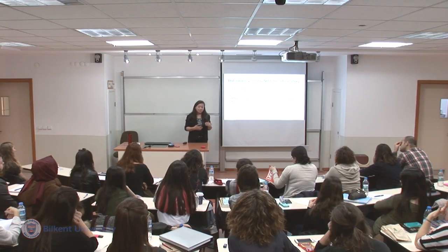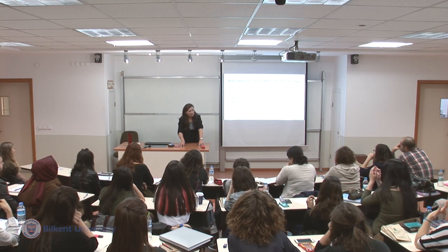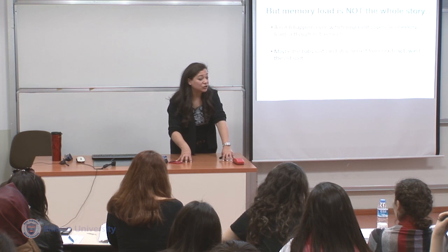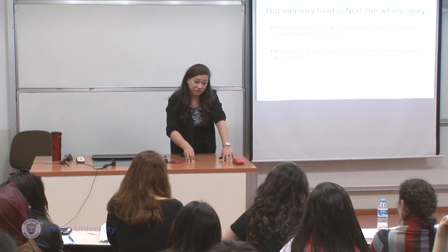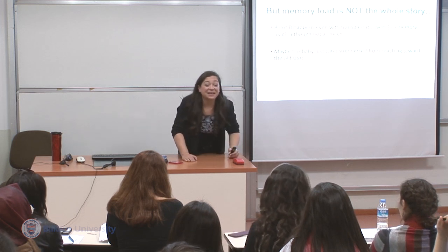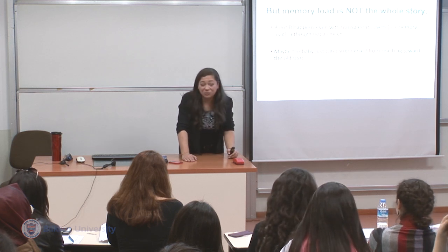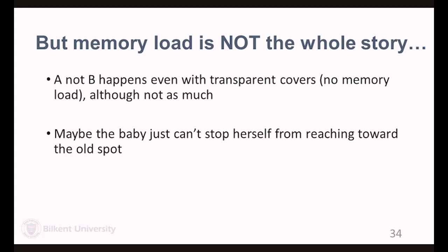So is it only a matter of memory? Some researchers have used transparent covers — imagine the blanket is a tulle. Up to a certain age, children still seem to go to the wrong spot first. A student suggests: is it inhibition? Yes, that would be a very good response. Maybe the baby just can't stop herself from reaching toward the old spot. That's also Bayerjan's motor perseveration argument — it keeps doing the same thing. So it's not about representing the object, it's about the action.